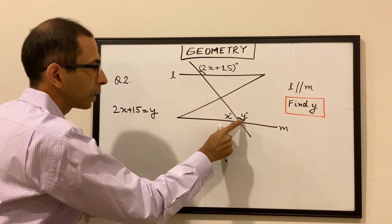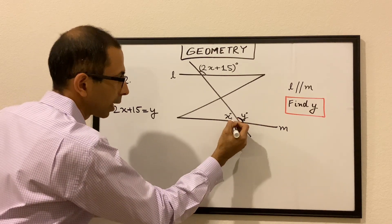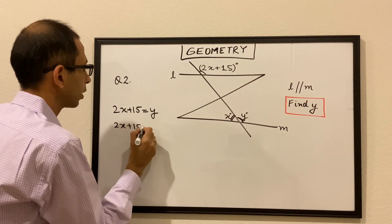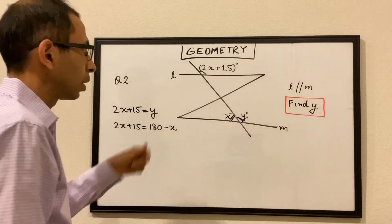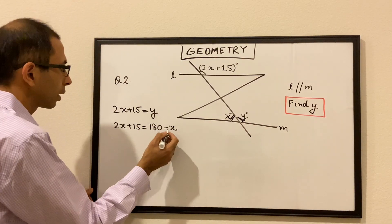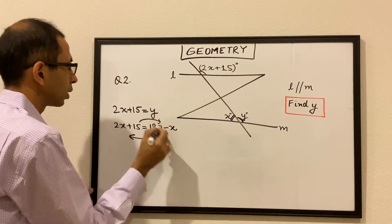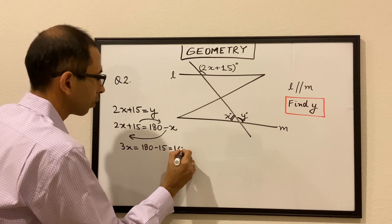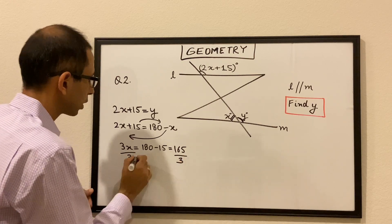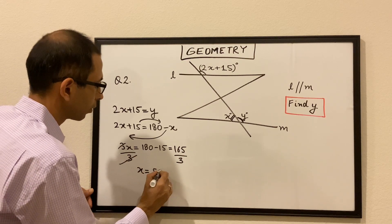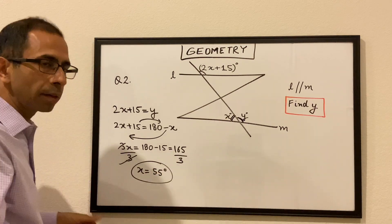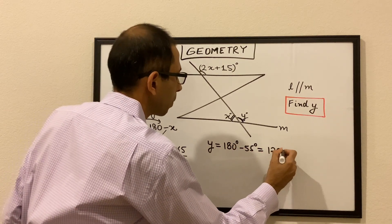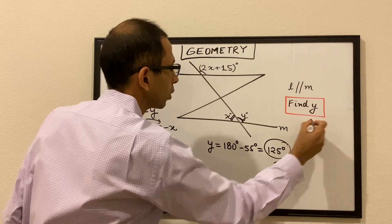We can write y in terms of x because y is nothing but 180 minus x. So 2x plus 15 is equal to 180 minus x. We can solve for x: bringing x to this side and 15 to this side, it becomes 3x is equal to 180 minus 15, which is 165. Dividing by 3 on both sides, we get x is equal to 55 degrees. So x is 55 degrees, and obviously y would be 180 minus 55, which is equal to 125 degrees.